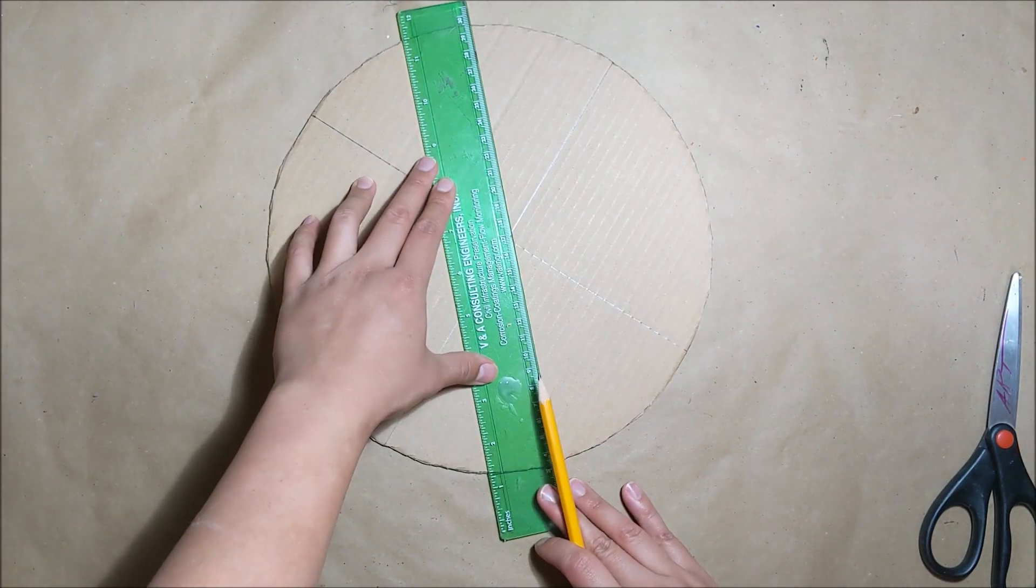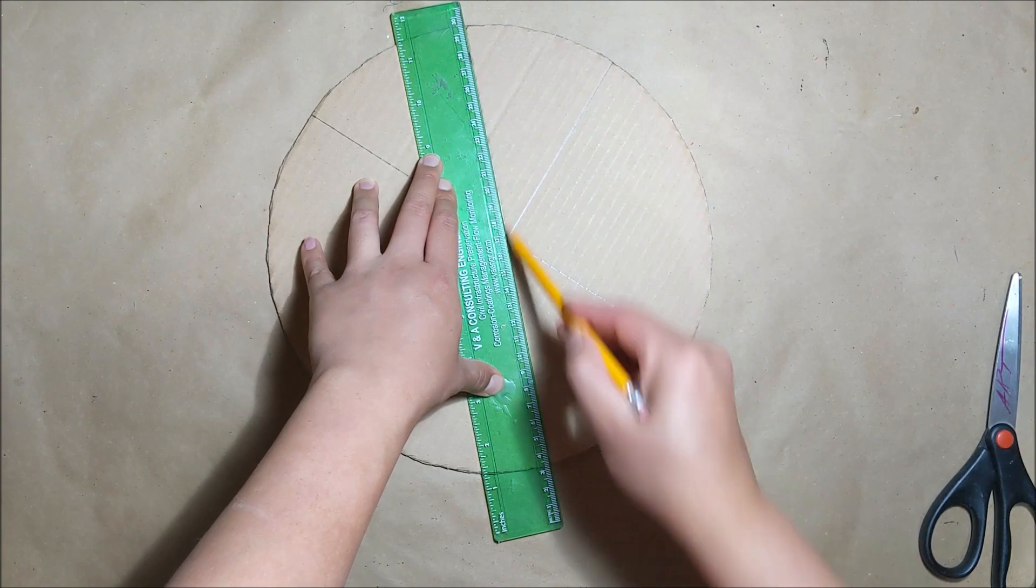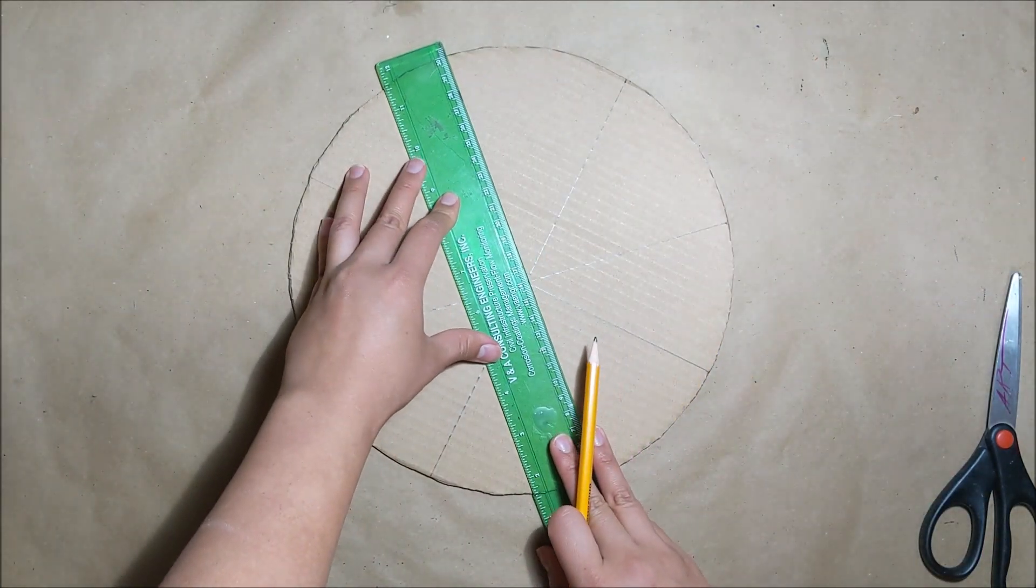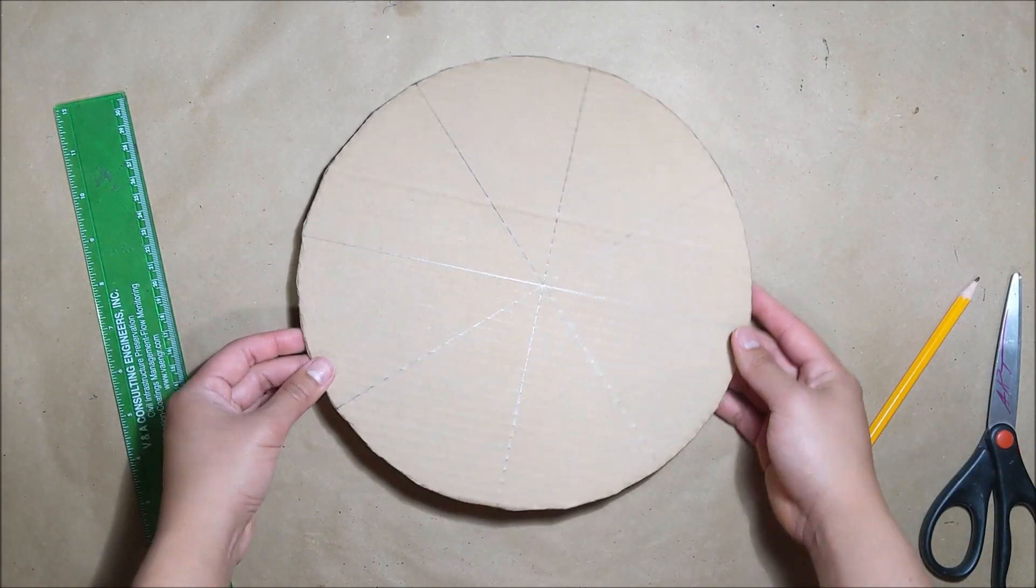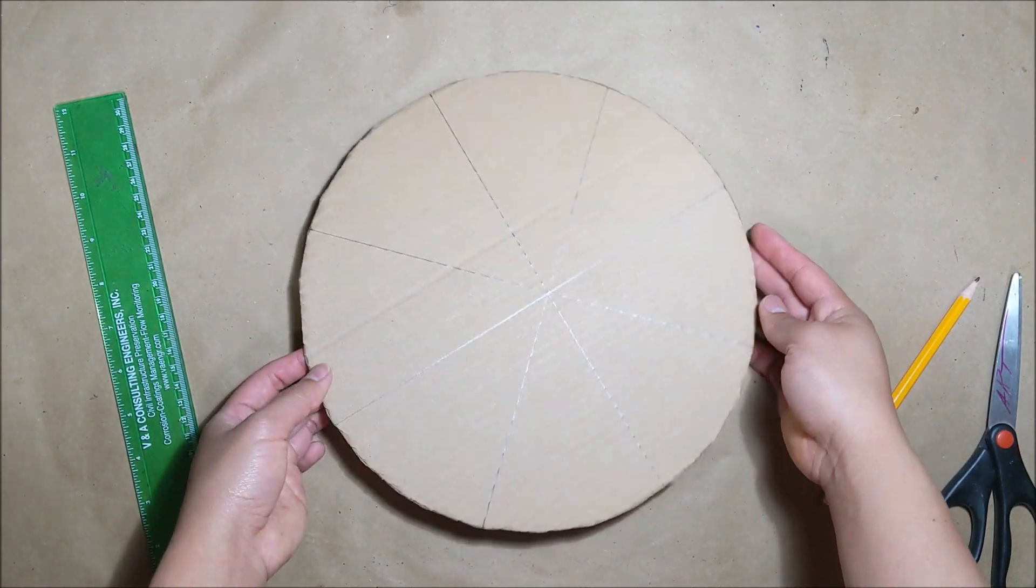Now rotate your pizza crust again. Go in the middle of those sections. We're creating two more lines so that we have a total of eight pieces. My slices aren't super perfect but that's okay.